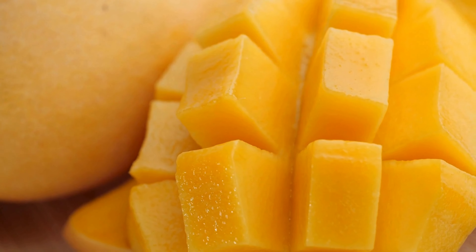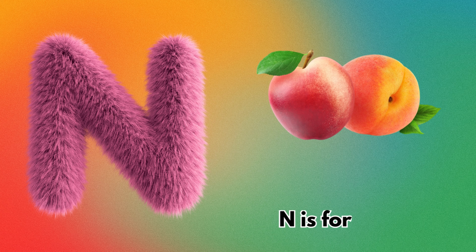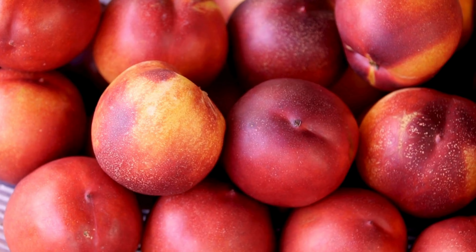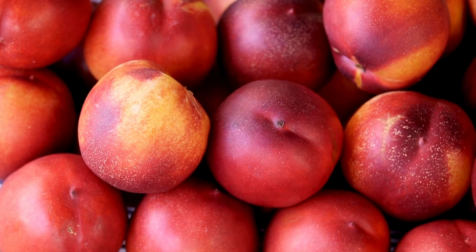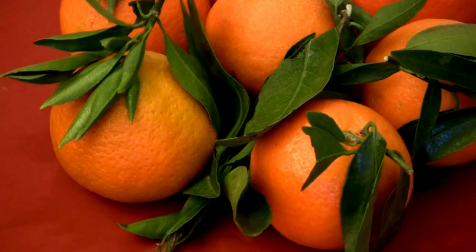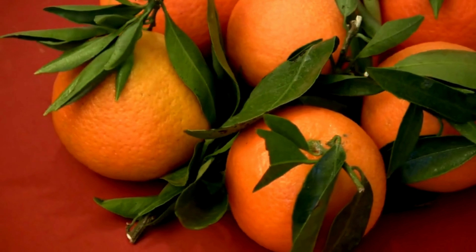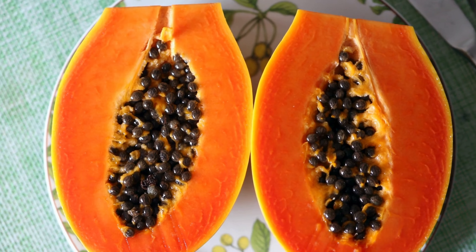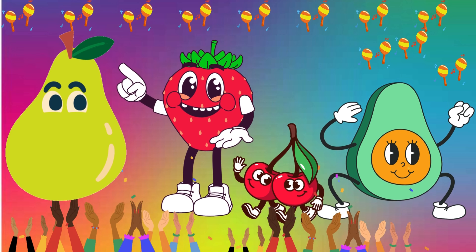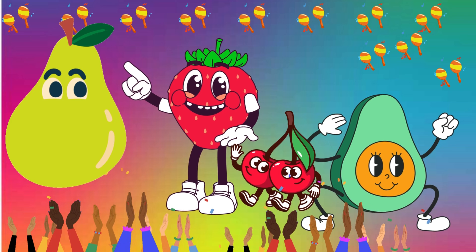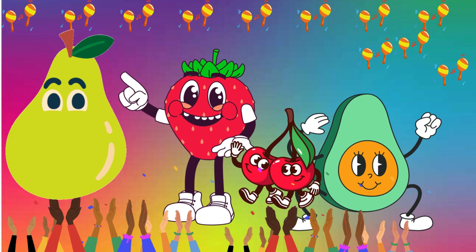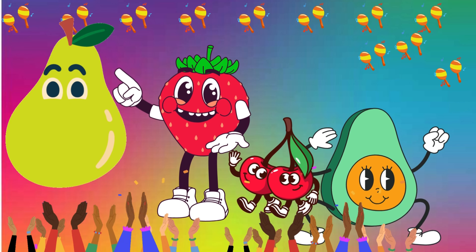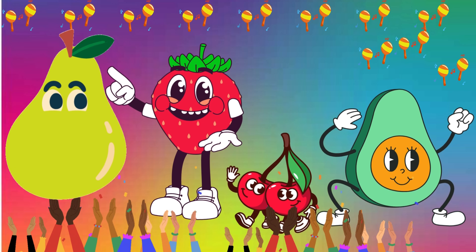M is for mango. N-n-n, N is for nectarine. O-o-o, O is for orange. P-p-p, P is for papaya. Sing the fruit song and learn as we go along.